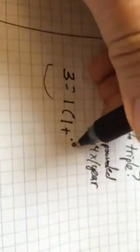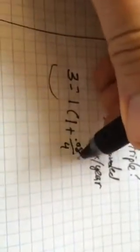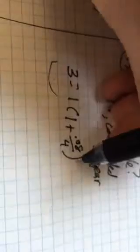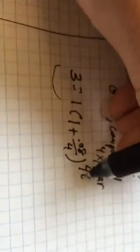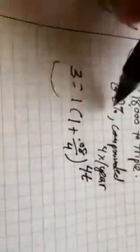So, compounded four times a year, 8%, so it's going to be 1 plus 0.08 over 4, compounded four times a year, and we want to know how long it takes for it to get up to three.